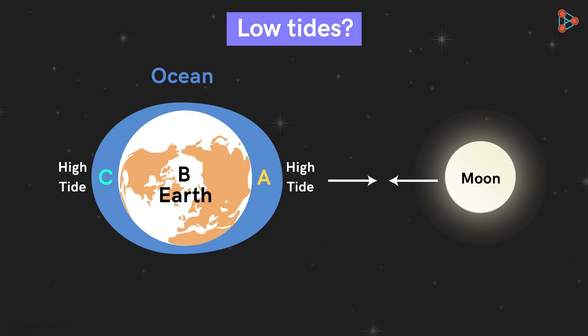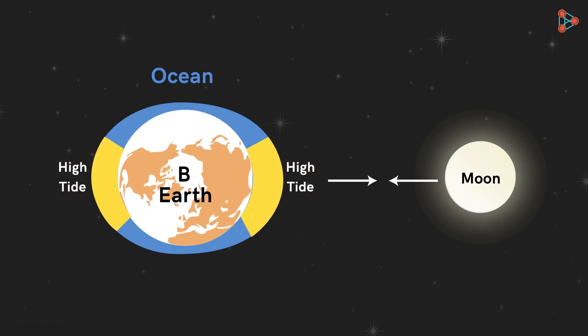But how are low tides formed? We know that in the high tide regions, the water level rises and bulges are formed. But from where does the extra water come to increase the level in the high tide regions? Actually, the water rushes out from these regions, as a result of which the water level falls here and creates low tide regions. In this way, two high tides and two low tides are formed during the day.